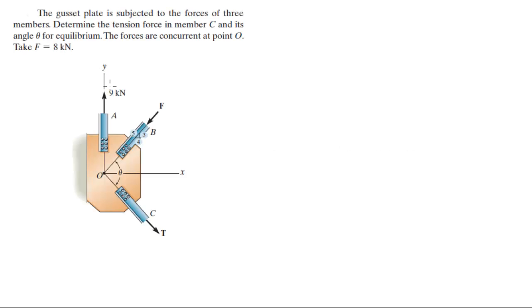Alright guys, now I'm going to do this problem where the gusset plate is subjected to the forces of three members. Determine the tension at C and its angle theta to be at equilibrium. The forces are concurrent at point O and the magnitude of F is equal to 8 kN.